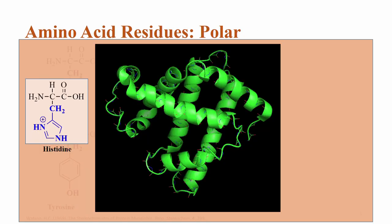Histidine is a very important polar residue inside myoglobin, which together with heme allows the binding of oxygen and enabling delivery to the muscles. Throughout the video, we'll zoom in to different parts of this protein to see what type of intramolecular forces are contributing to the three-dimensional structure of this protein.